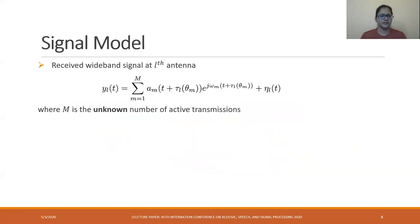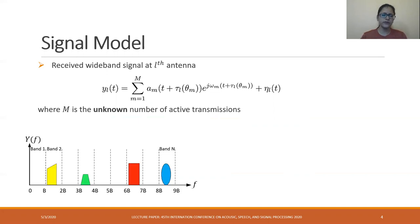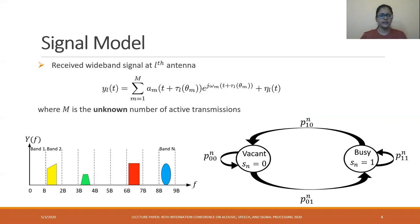Here we consider the traditional signal model where we consider a wideband signal. The narrowband signals are uncorrelated. An important point to note is that the number of active transmissions M is unknown in our case. We assume that the entire frequency range is divided into N number of frequency bands, each of bandwidth B hertz, and the occupancy status of these bands depends upon the Markovian decision process which has two states — busy and vacant — and the occupancy of these frequency bands depends upon the transition probability between these vacant and busy states.